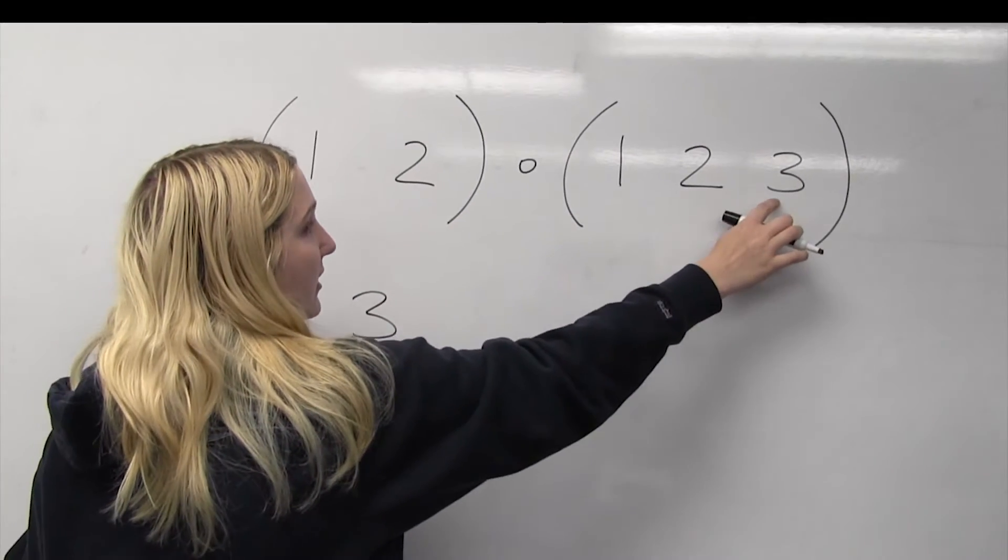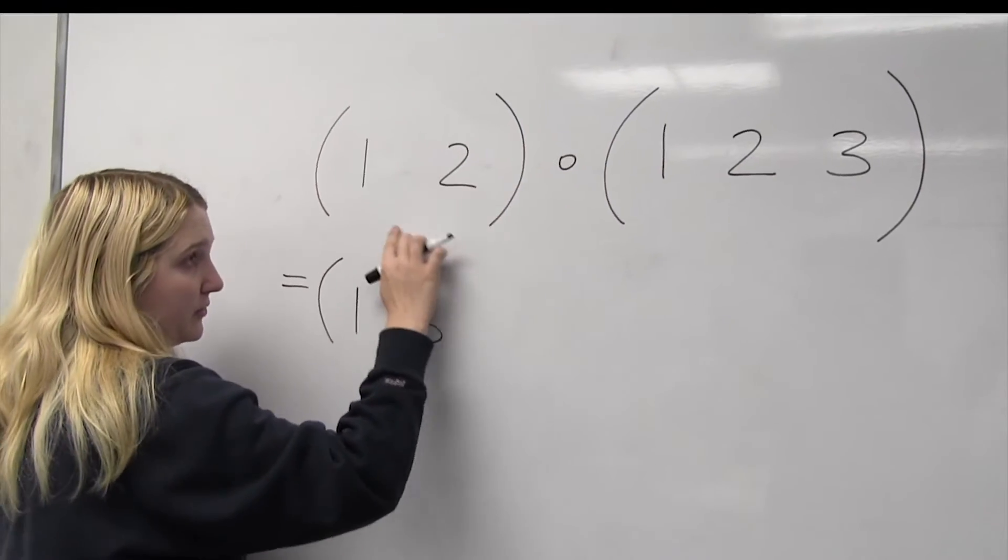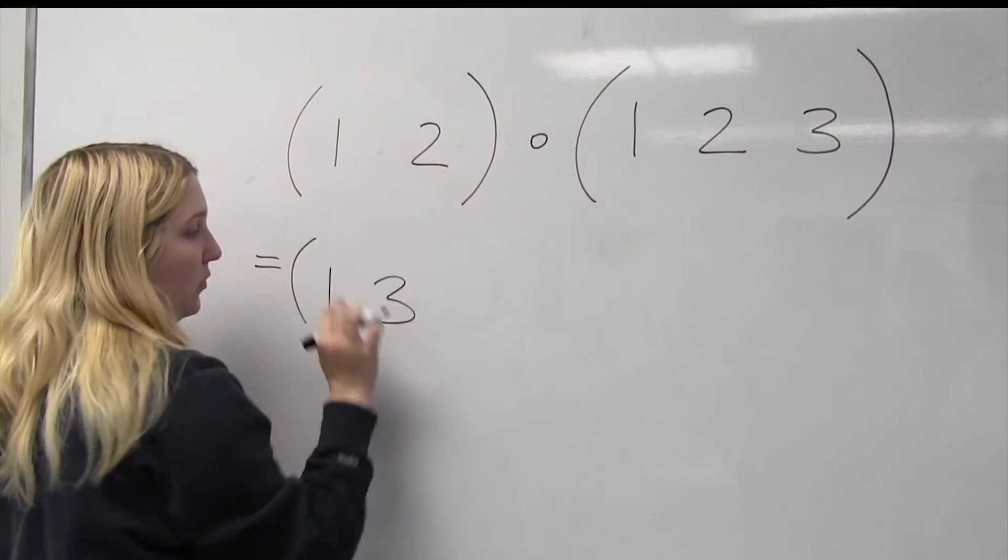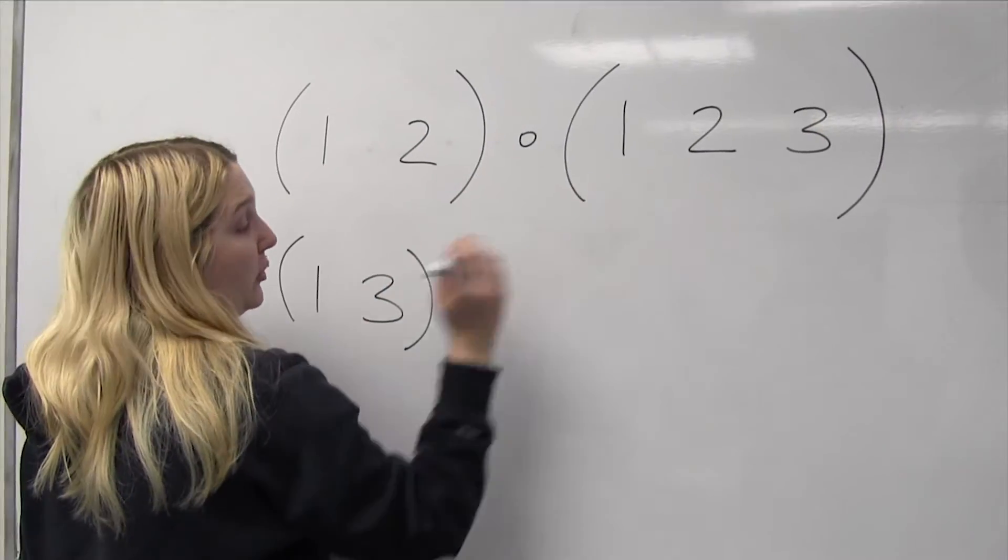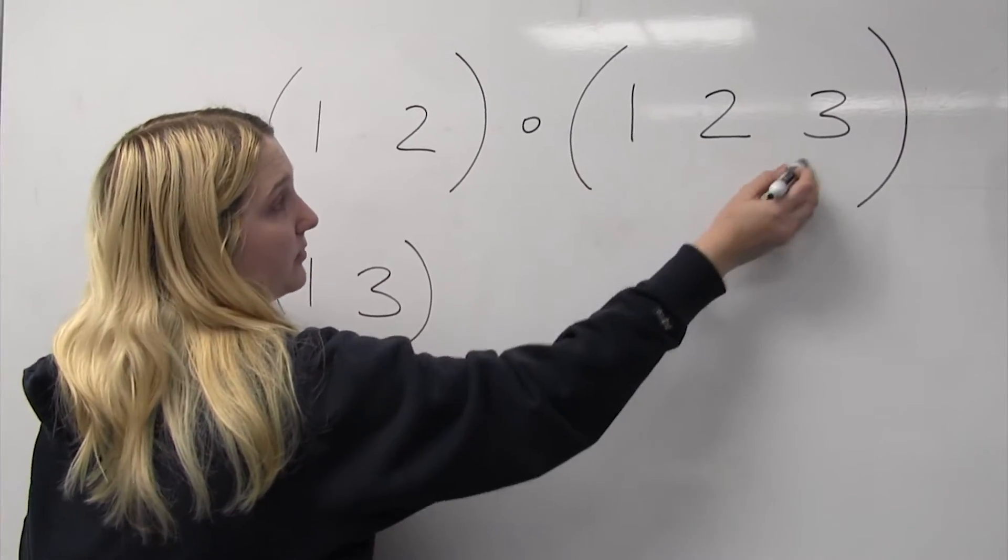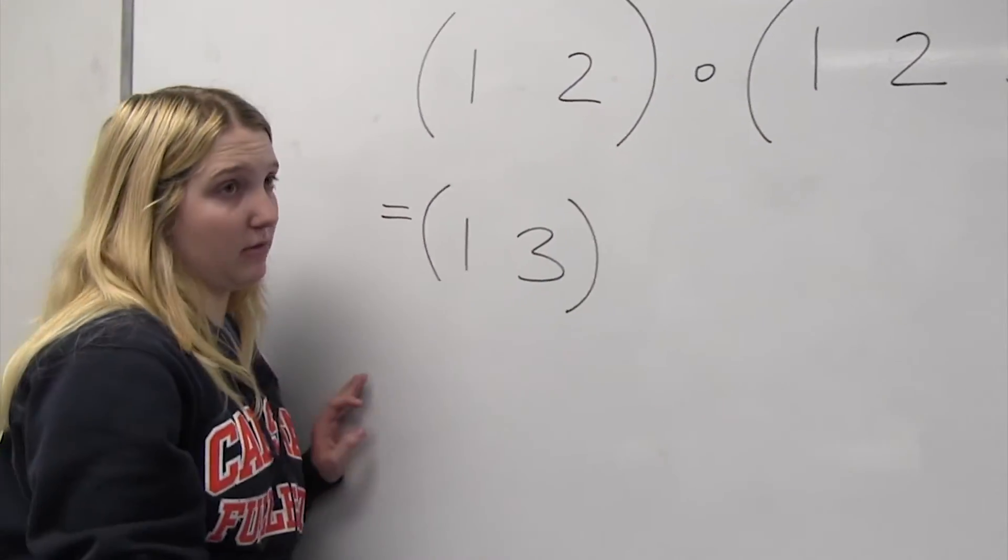Then looking over here at 3, 3 goes to 1, which goes to 2. Composing it, we see 2 goes to 1. So 3 goes to 1, which is what we have here, so we can close it. And you can see that we don't have to write 2 since 2 goes to 3 goes to 1, and then 1 goes to 2, so 2 stays the same. So we don't need to write it.